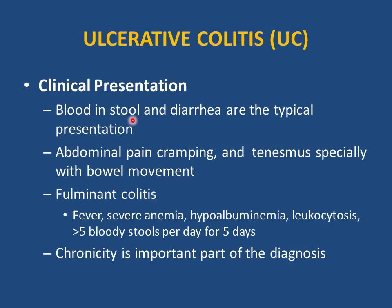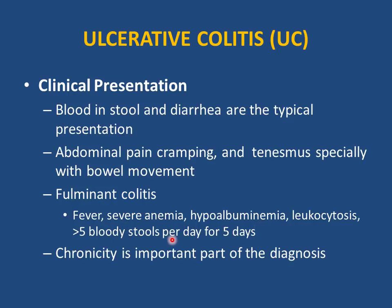Clinical presentation of ulcerative colitis: blood in stool and diarrhea are typical. A patient with intermittent abdominal pain, bloody stool, and chronic diarrhea makes ulcerative colitis very likely. Abdominal pain, cramping, and tenesmus especially with bowel movement are common. Severe complication is fulminant colitis: severe abdominal pain, fever, severe anemia, hypoalbuminemia, leukocytosis, and more than 5 bloody stools per day. Chronicity distinguishes this from infectious causes.